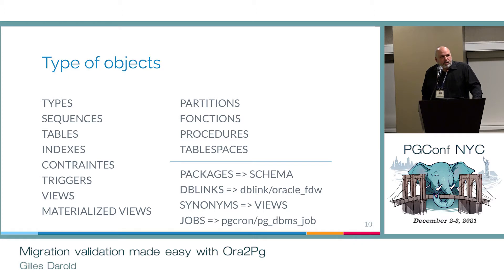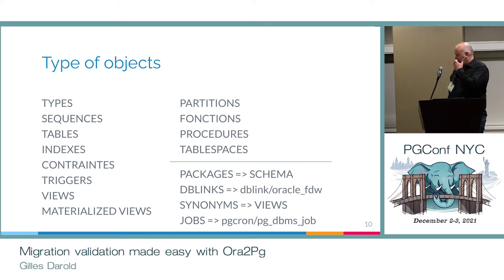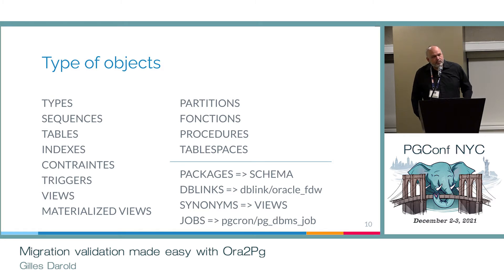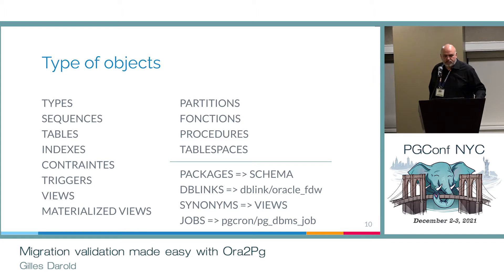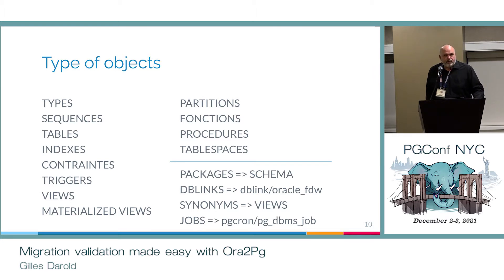Most of the time synonyms are not migrated because they correspond to something that does not exist. But if there is a need to migrate them, we can use views instead of synonyms to emulate them. Most of the time synonyms are used to hide from the user the path to the object, and views are done for that, so this is not problematic.